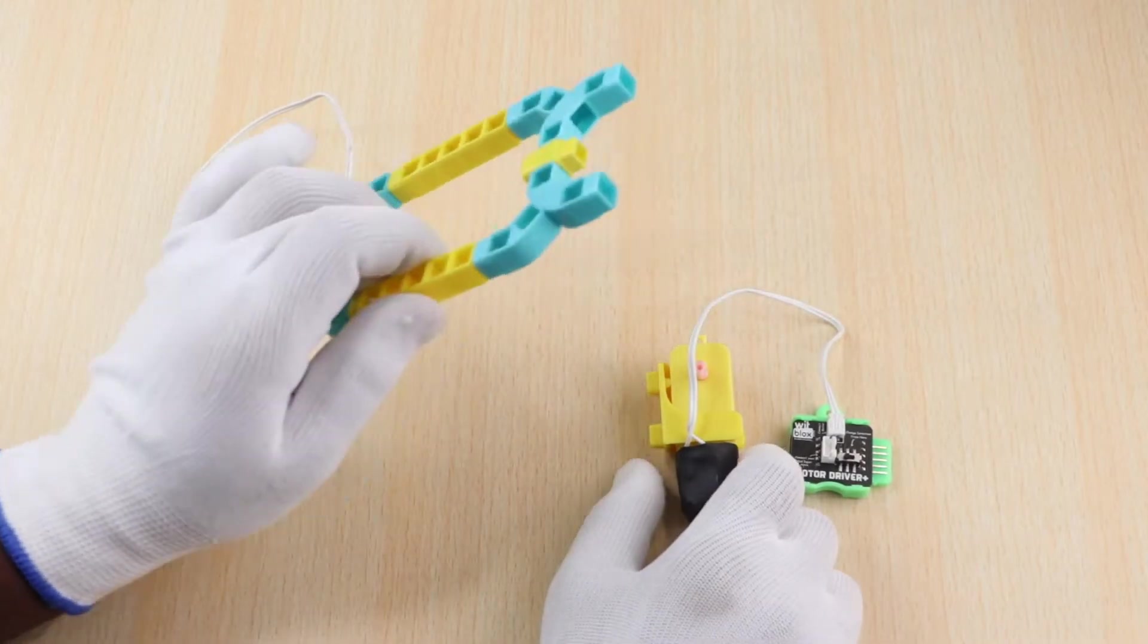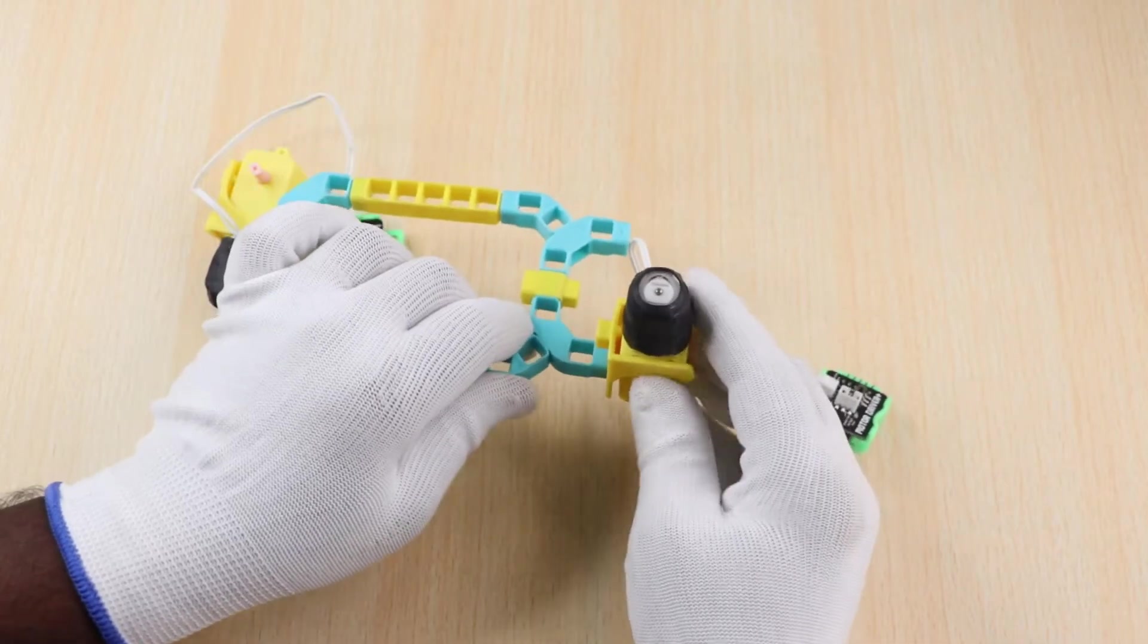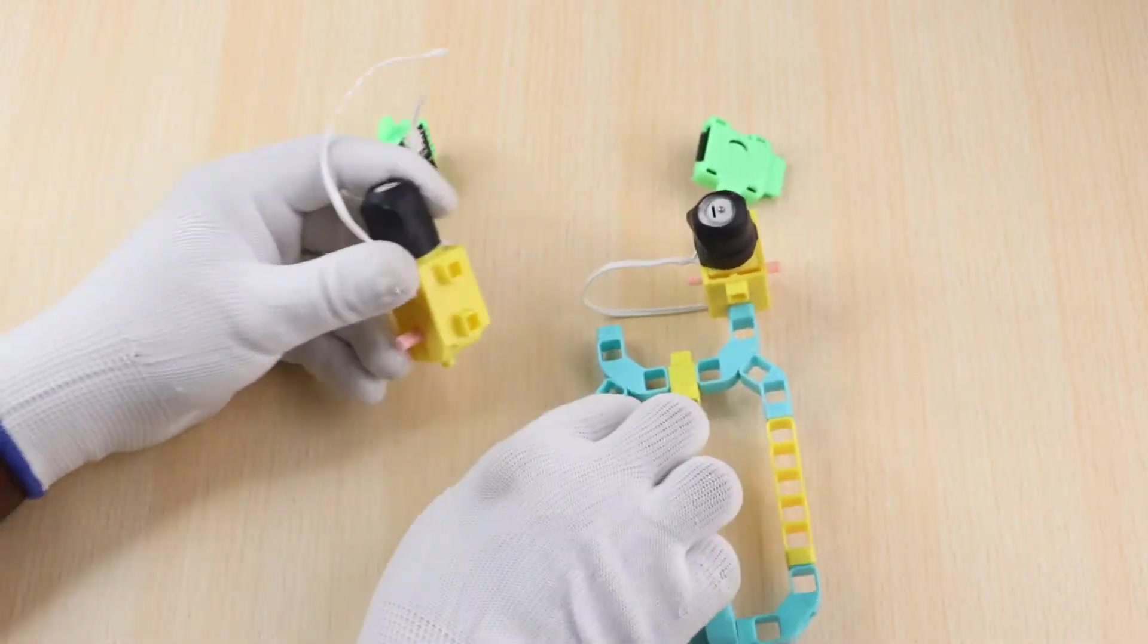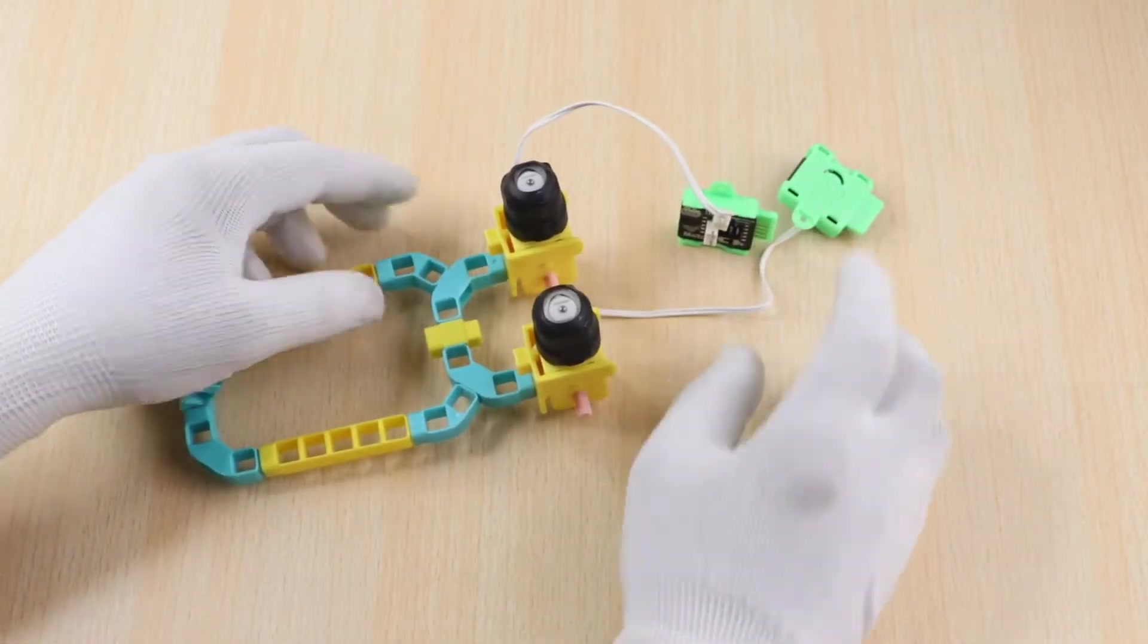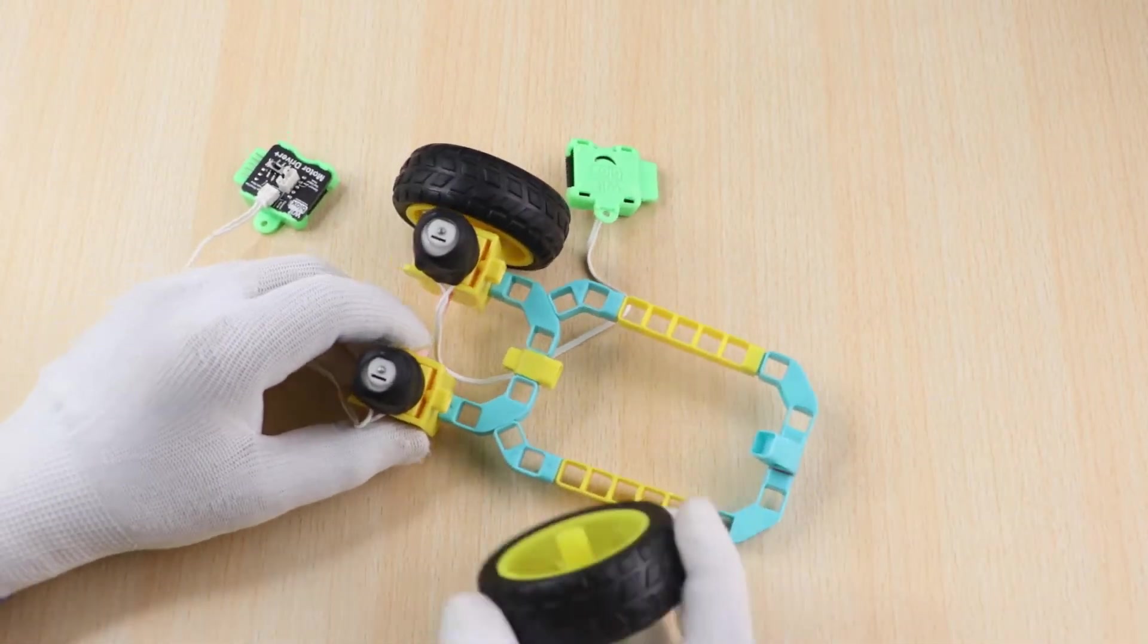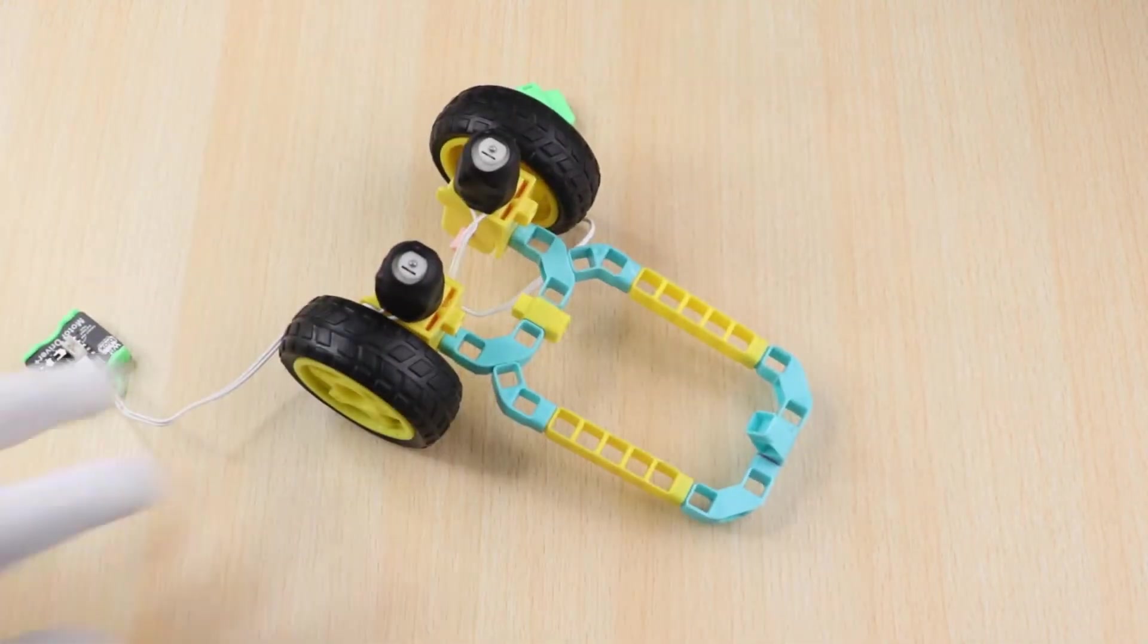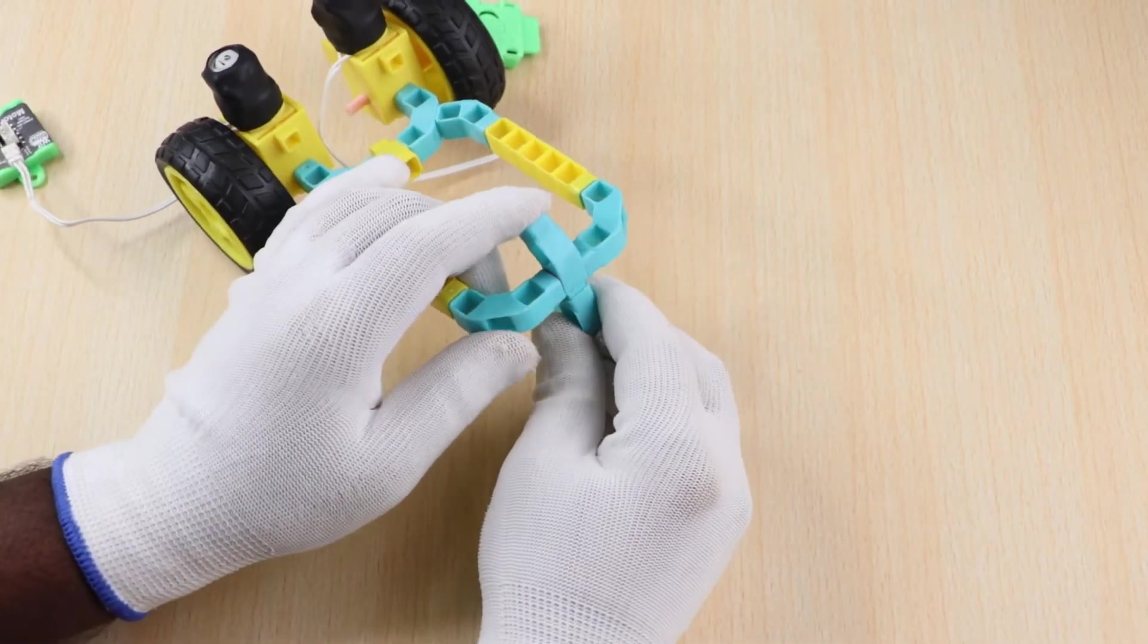Then take 2 motors and join them to the previous structure as shown. Now join wheels to both the motors as shown. Then take 1 three-hole elbow and join it to the front base part of the car.